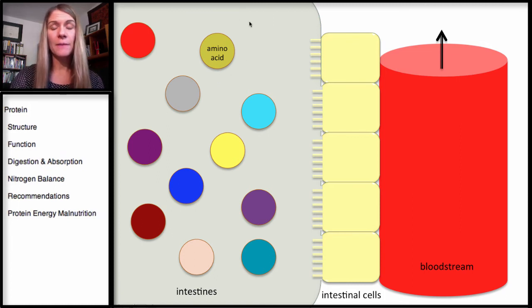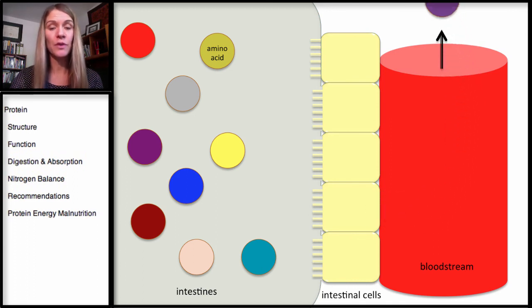Once the amino acids go from the protein to being unfolded, to the polypeptide, to the dipeptide, tripeptide, and then become these individual amino acids, they are then absorbed into the bloodstream. So across the intestinal cell lining and into the bloodstream.